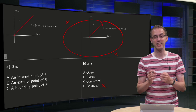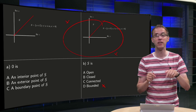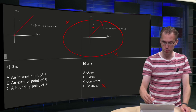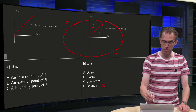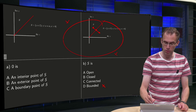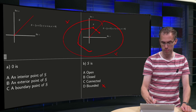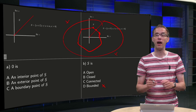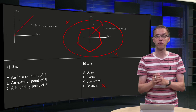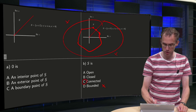Is the set S connected? A set is connected if you can connect any two points in S with a sequence of line segments such that the sequence is entirely in S. So if you take this point and that point, you can't connect them directly because that path goes outside of S, however we can connect the points in another way — like this, for example. Now our sequence of lines is entirely in S, and we can do this for any two points, so that means our set S is connected.